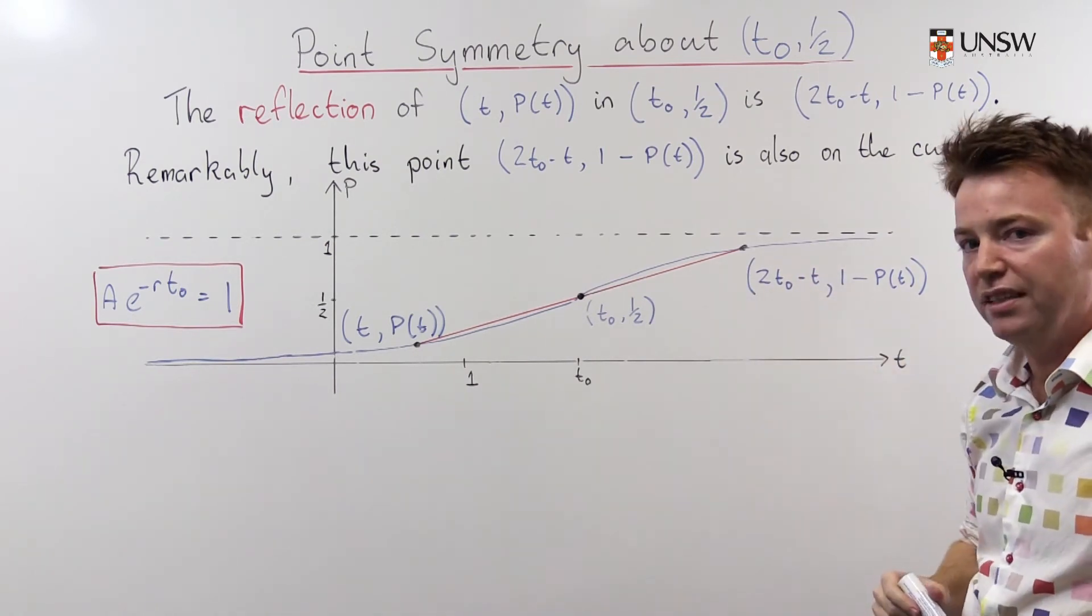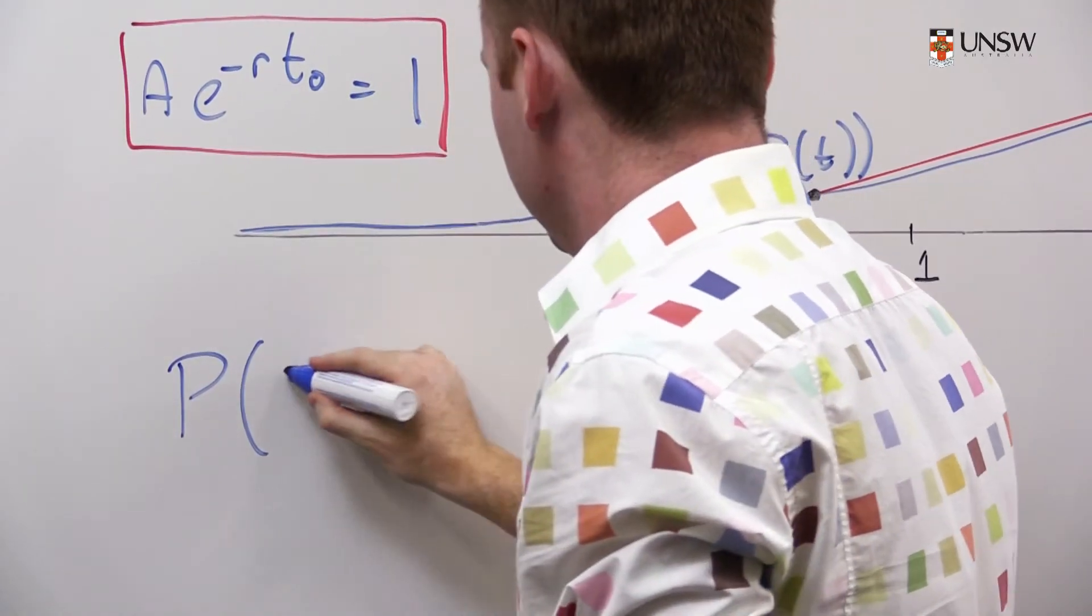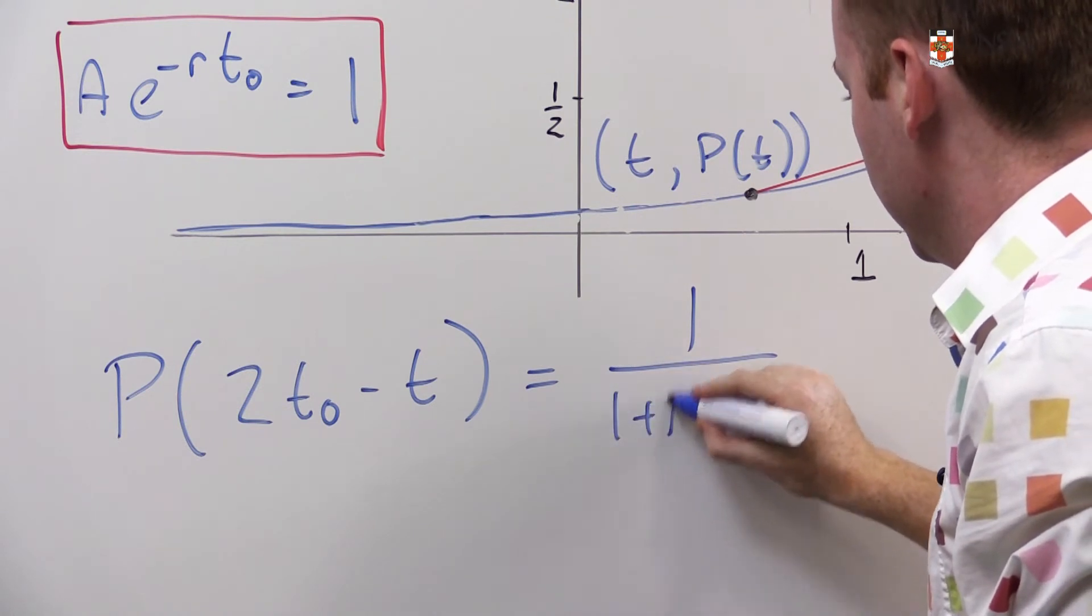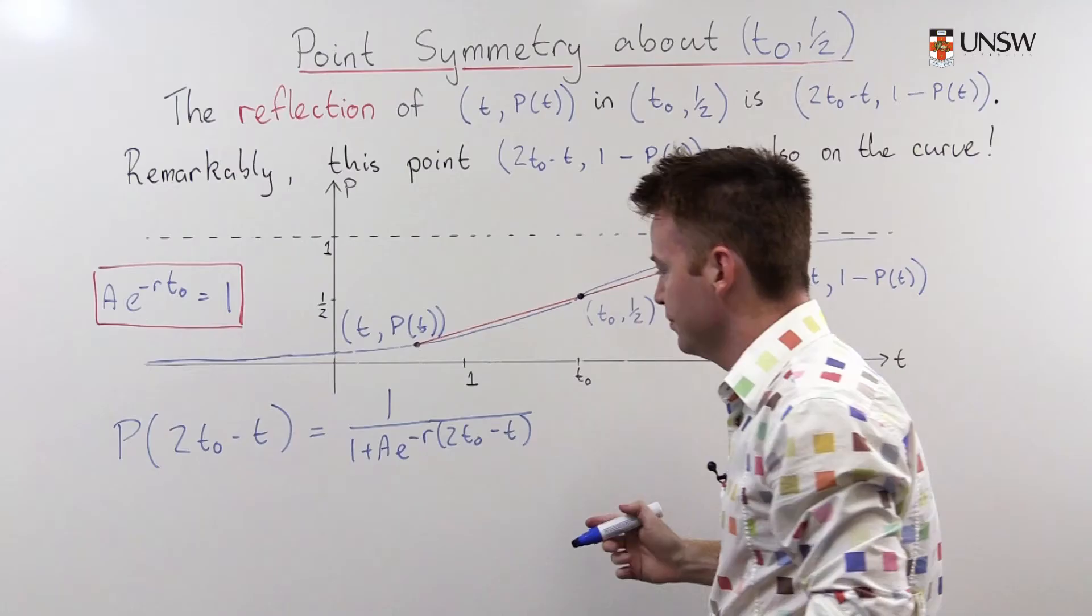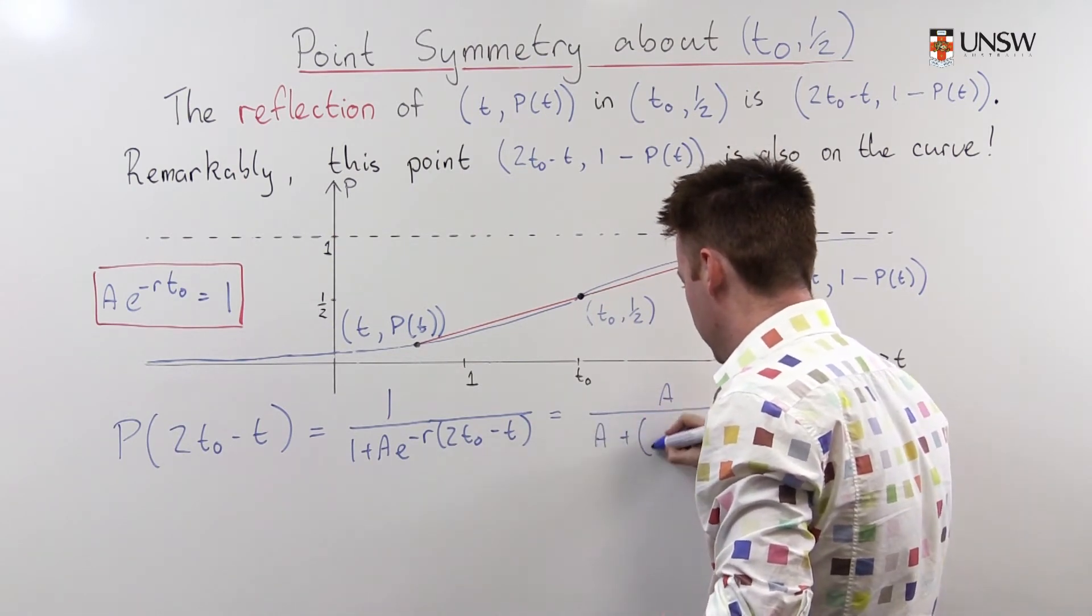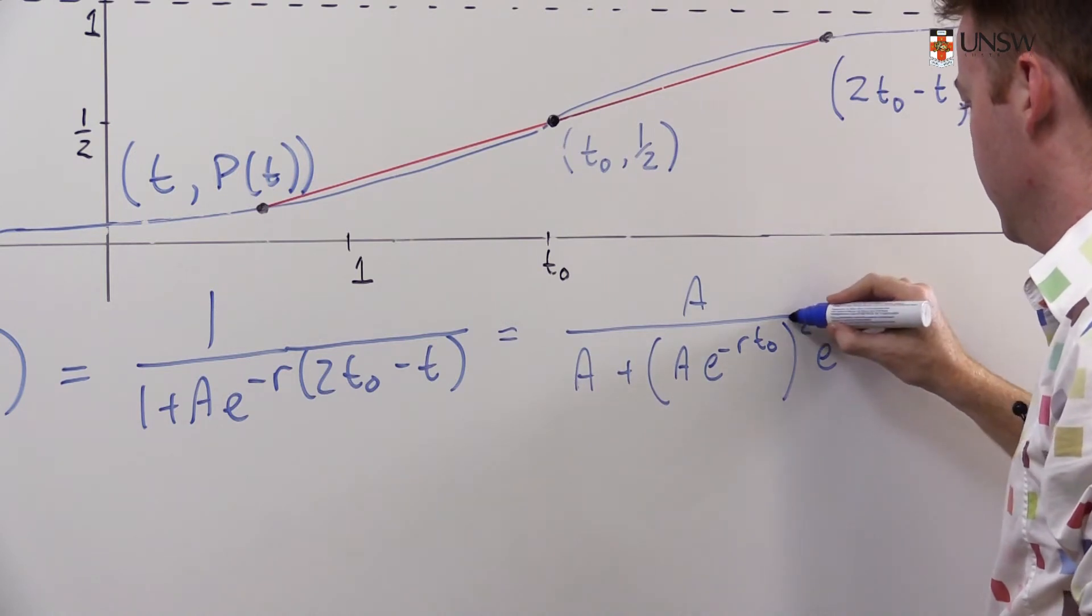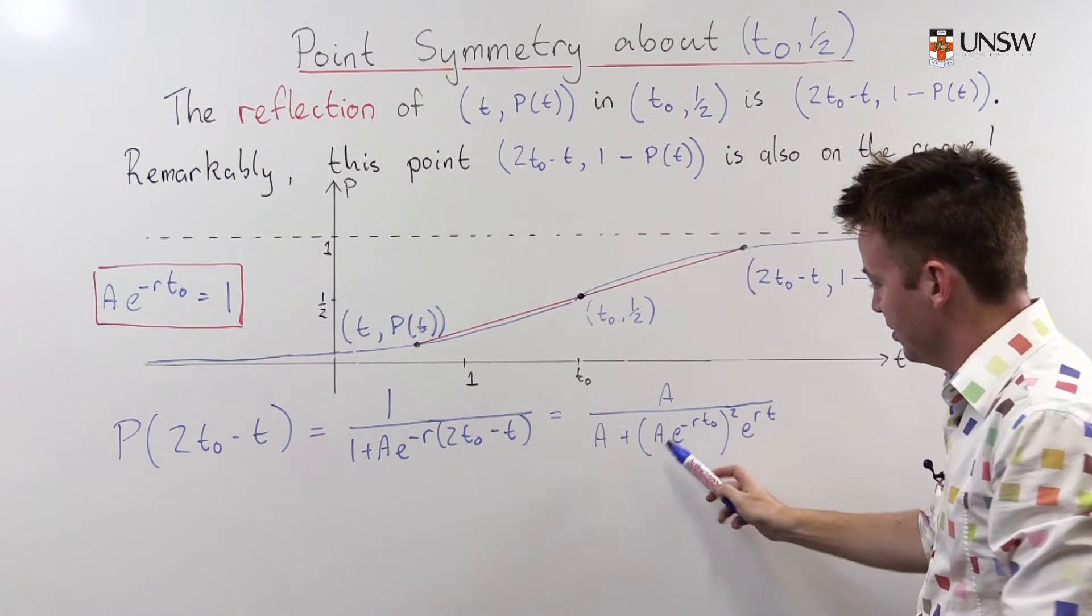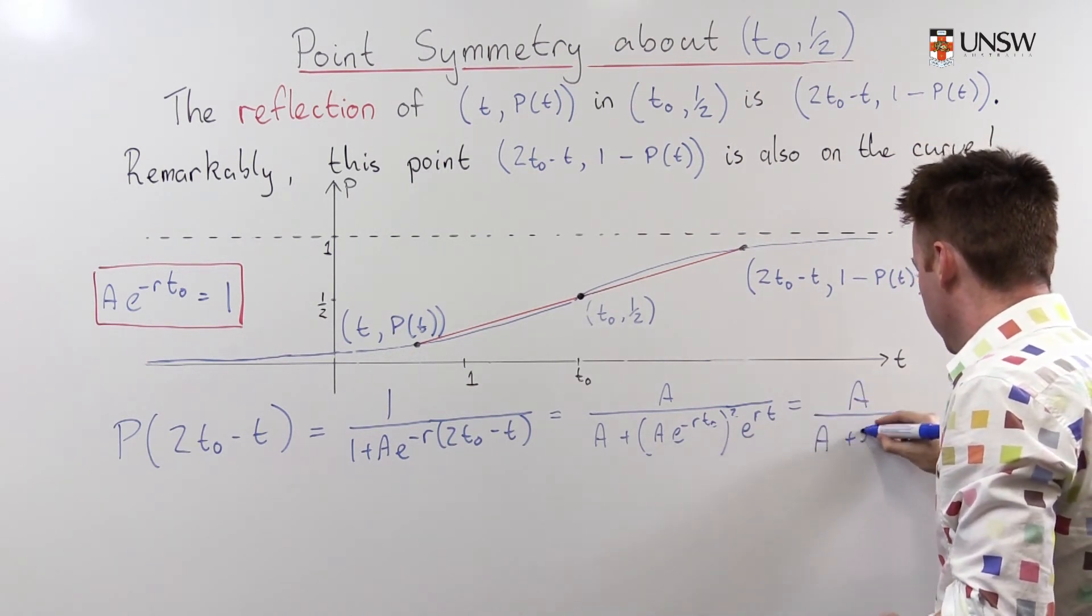All we need to do is show that this point's on the curve. So if we take P of this, hopefully we get 1 minus P of t. Let's start with P of 2t0 minus t. Well, I plug this into my formula for the logistic curve. That's 1 over 1 plus ae to the negative r times 2t0 minus t, which is ae to the negative rt0 squared e to the rt.